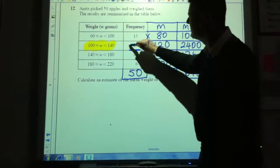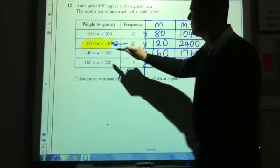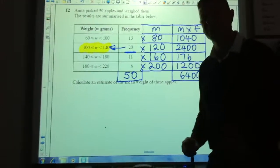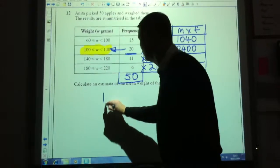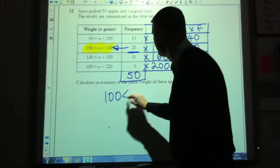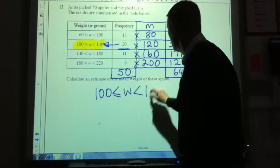So I know that the 25th apple has got to be in that group. So the median is in the group 100 to 140.